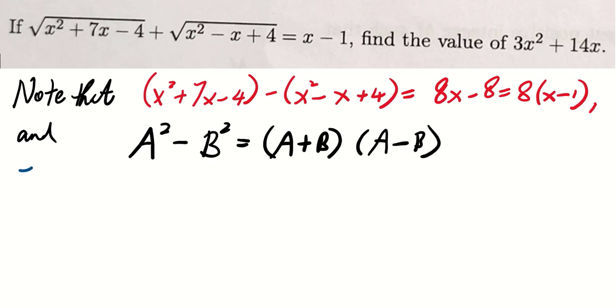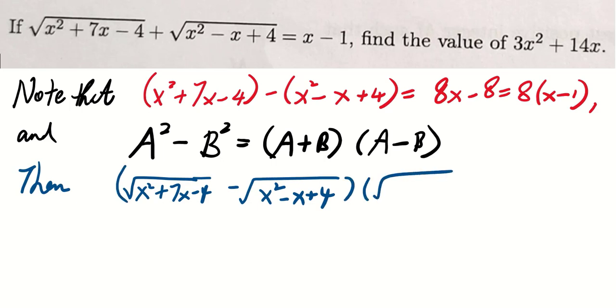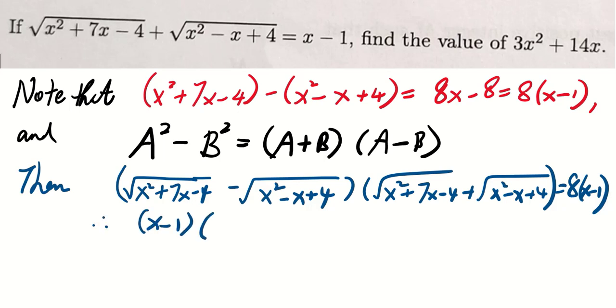This means that the square root of x squared plus 7x minus 4 squared minus square root of x squared minus x plus 4 squared times the square root of x squared plus 7x minus 4 plus square root of x squared minus x plus 4 is actually equal to 8 times x minus 1.